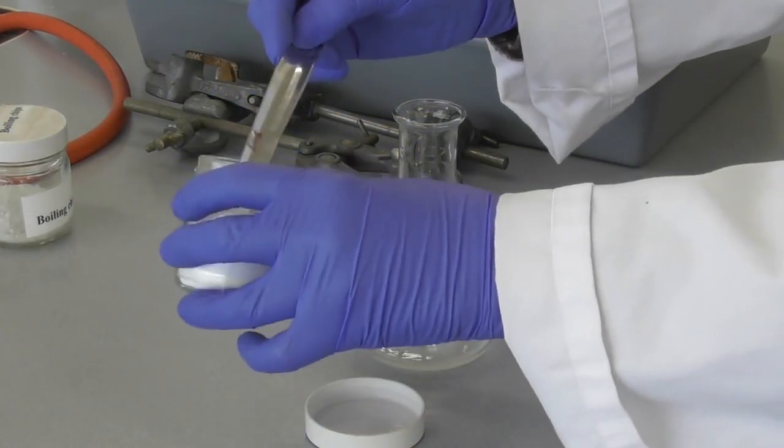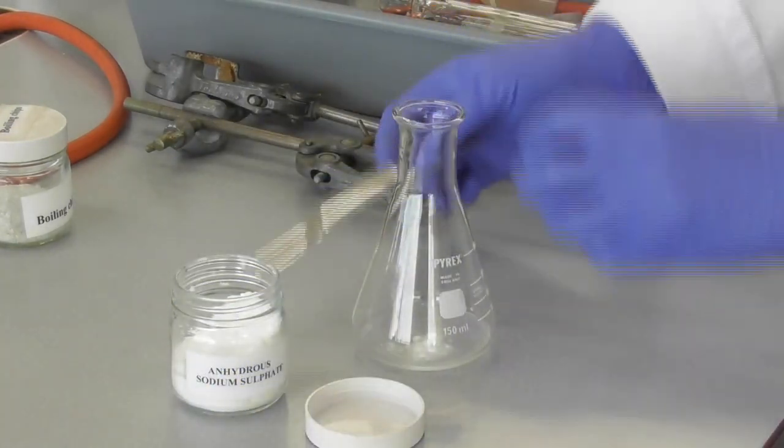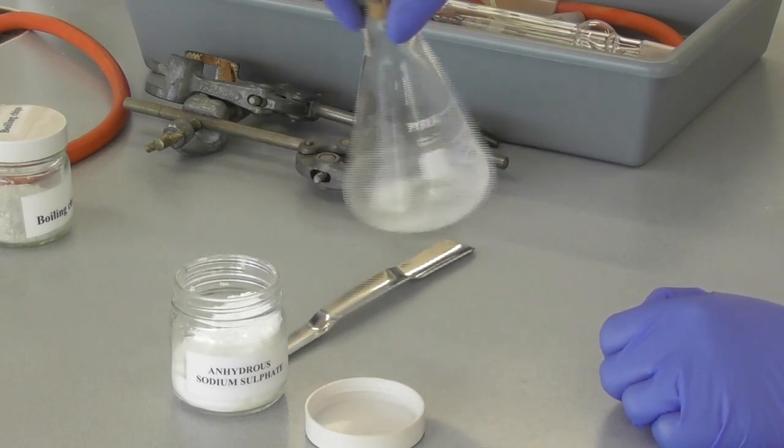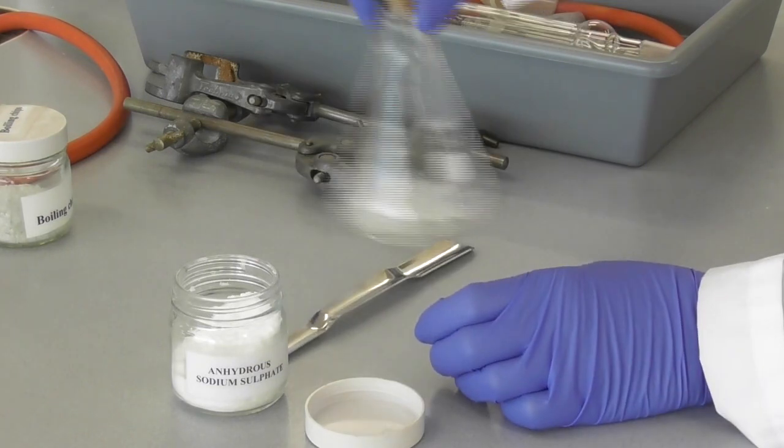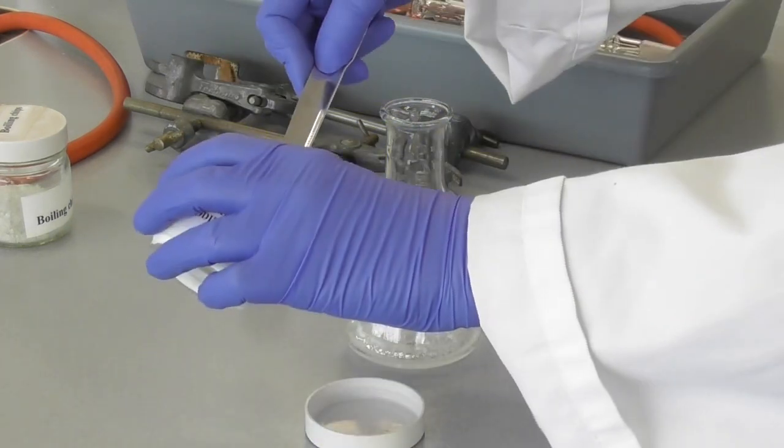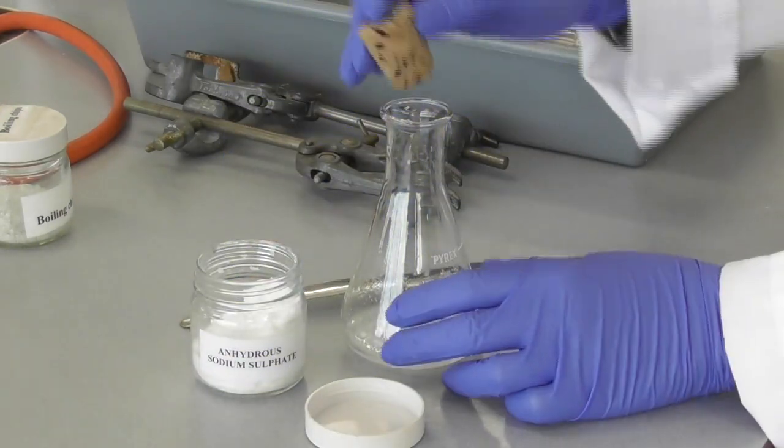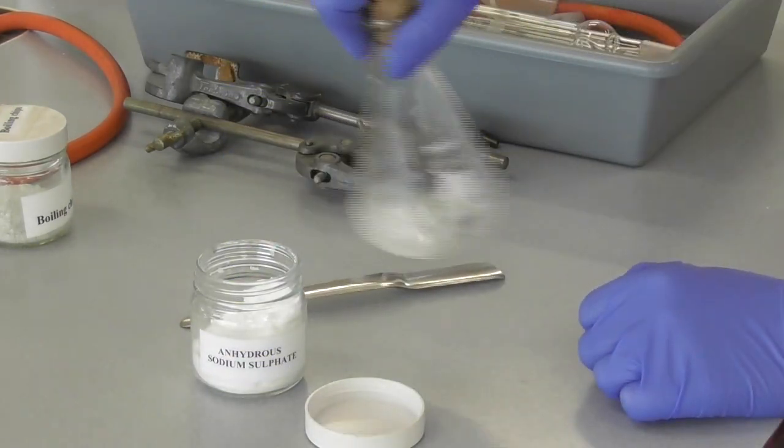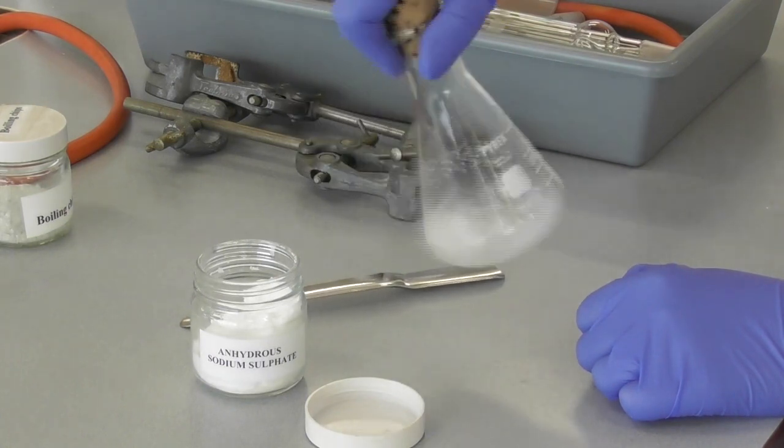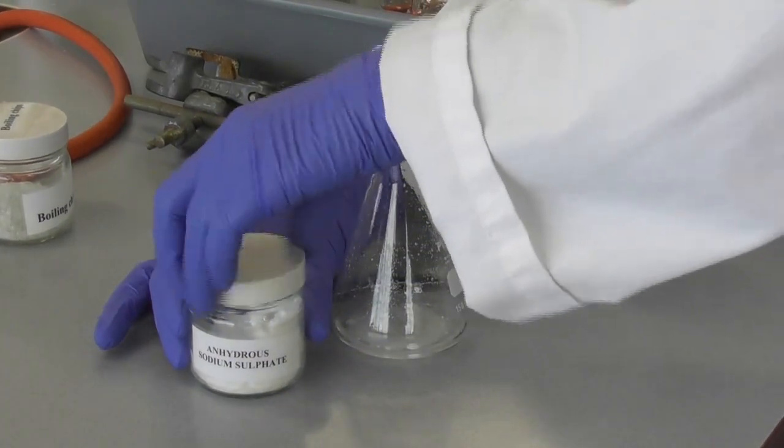We add a good spatula full of anhydrous sodium sulfate into our flask. This will remove any dissolved or transferred water. We give the mixture a good shake, and we might have to add some more sodium sulfate if the solution is not dry yet. We can tell it's dry when the sodium sulfate is floating in powdery form in our mixture and the solution is clear.